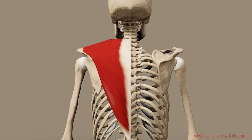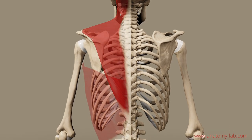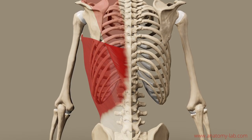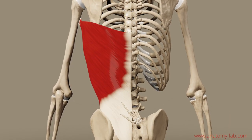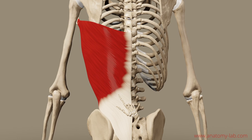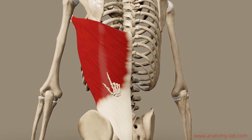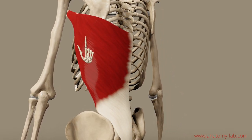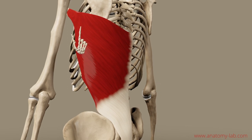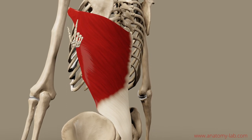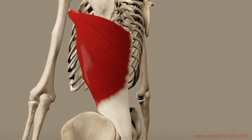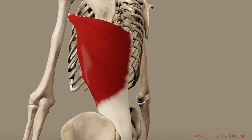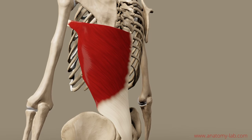That's enough for the trapezius, let's move on to the latissimus. Here you can already see my smart finger pointing out the direction in which the fibers of the latissimus are flowing and just admire for a moment how the latissimus is hooking on to the inside of the upper arm.